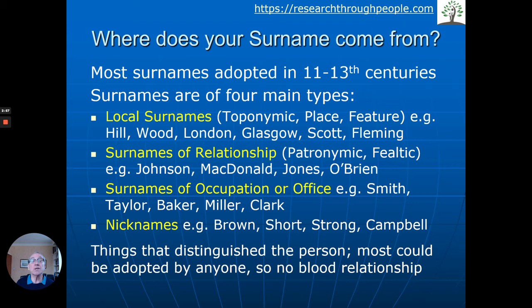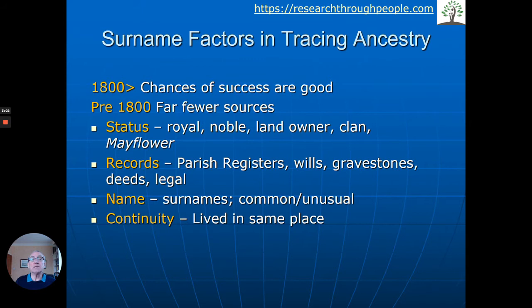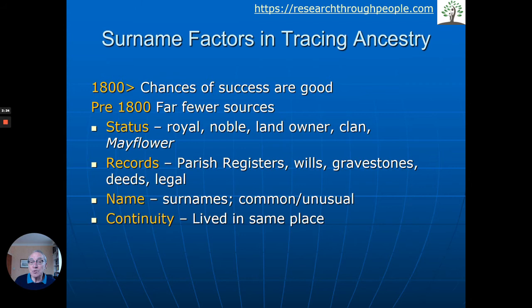So what are the factors in tracing ancestry, particularly for going back through surnames? From 1800 onwards, the chances of success are good because the available records are good — official registration of births, marriages, and deaths. Before then, not only was official registration not around, but there are far fewer sources. Status was the big factor that might determine if you can get back three, four, five hundred or more years. Obviously royalty was tracked and recorded, and nobility and land ownership — quite often you find records of people owning land.